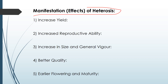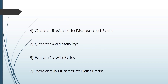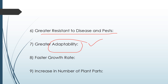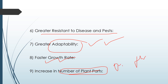When a plant undergoes heterosis, its yield increases along with reproductive ability, general size, and quality — all much better than the parents. Effects include early flowering and maturity, greater resistance to disease and pests, greater adaptability to various climatic conditions and environmental stresses such as temperature and lighting, enhanced growth rate, and an increase in the number of plant parts — buds, flowers, and fruits.